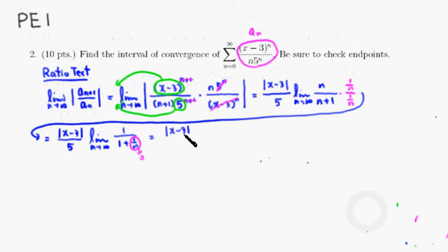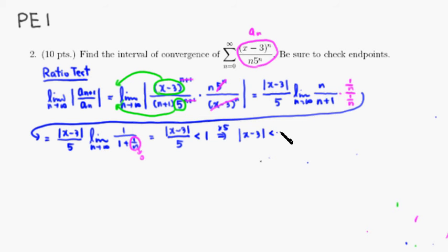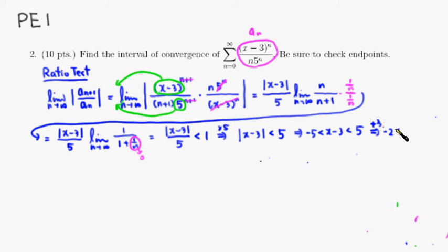In order to get convergence, we want this to be less than 1. So absolute value of (x minus 3) over 5 is less than 1. Multiplying by 5: absolute value of (x minus 3) is less than 5. Removing the absolute value sign, (x minus 3) must be between negative 5 and positive 5. Adding 3 to everything, we get negative 2 < x < 8. So x is between negative 2 and 8 for convergence. But we have to check the endpoints.